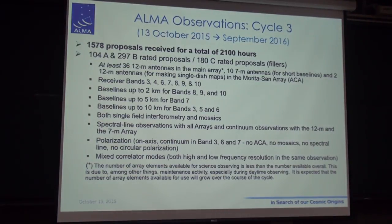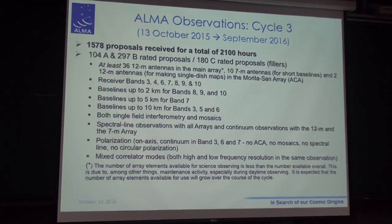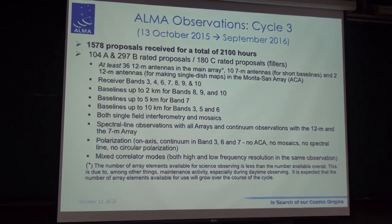Let me quickly cover what is happening today and how the future looks. Since last week, the fourth cycle of observation — Cycle 3 — started. There were a record number of 1,578 proposals submitted, the biggest number ever received for ground-based and space-based telescopes including ALMA, bigger than in cycle 2. There were 184 and 297 proposals accepted for A and B, and 180 proposals for fillers and C. There are at least 36 antennas, though we under-promise and over-deliver — we have more antennas currently operating than 36. We have seven receivers offered to the community, with long baselines, single-field interferometry mosaics, spectral line observations, polarization, and mixed correlator modes.